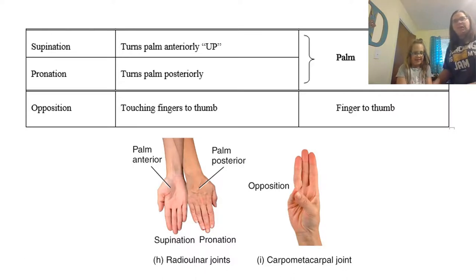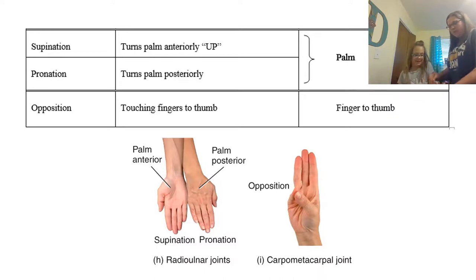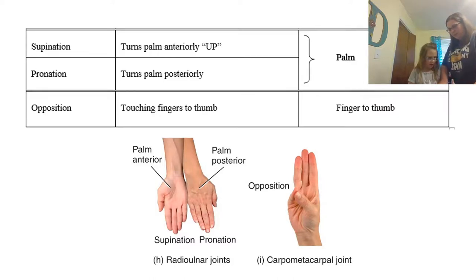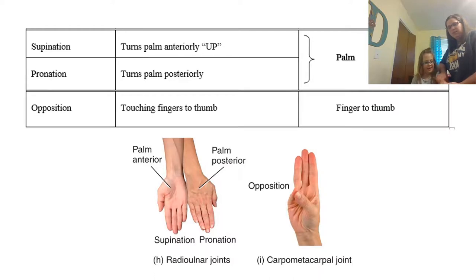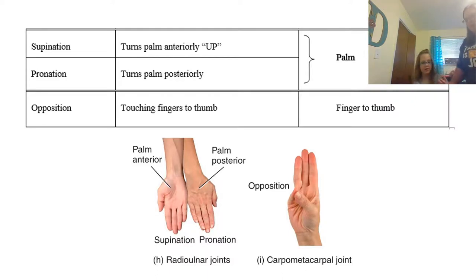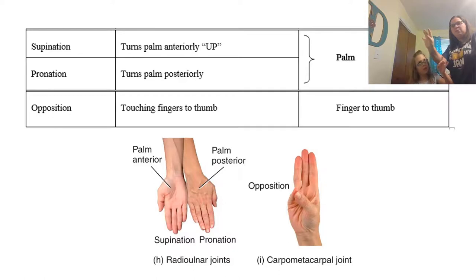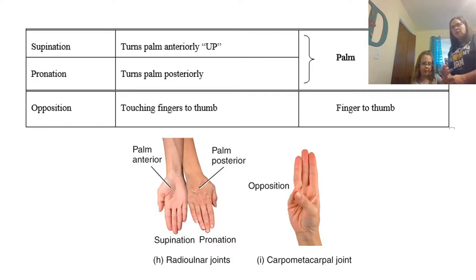When we're looking at supination and pronation: supination is going to be where your hand is open and facing up — you could put some soup in it, like a bowl. Pronation is going to be the opposite, where you turn it over, palm down. So palm down is pronation and palm up is supination. Another one is opposition — this is touching your fingers to your thumb. When you go from each finger to your thumb, that's opposition, because you are pulling your thumb to the opposite side of your hand.